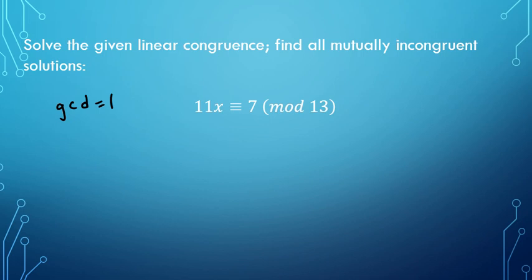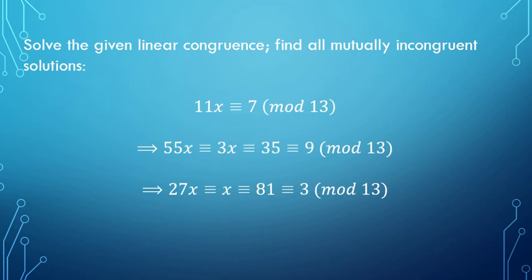Now we're working with some larger numbers here. Now they're not as nice. So this does require a little bit more thinking perhaps. But if I take 11 and multiply it by 5, that gives me 55. And then take 55 mod 13 and you're left with 3. So 55x is congruent to 3x. 7 times 5 is 35. But 35 mod 13 is 9. So now we're down to 3x is congruent to 9 mod 13.